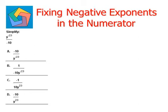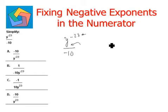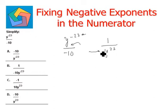The first one says: simplify y to the power of negative 23, divided by negative 10. Here we see that y is raised to a negative exponent. We need to fix this negative exponent — that is, we need to make it positive. All we need to do is move this part of the expression to the denominator: y to the power of 23.